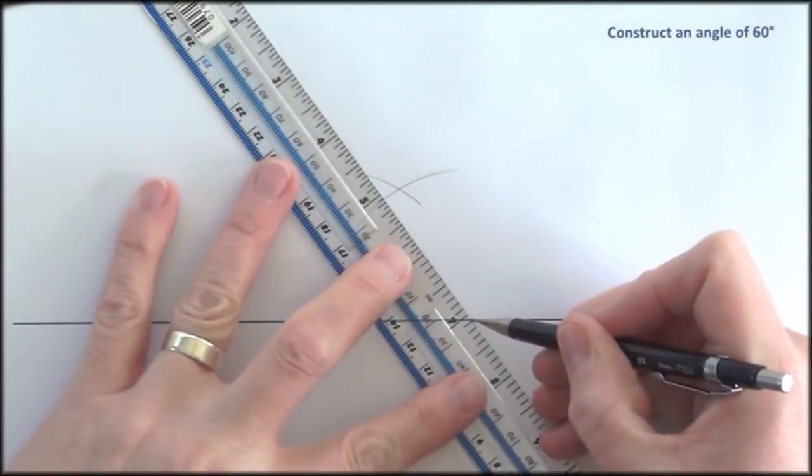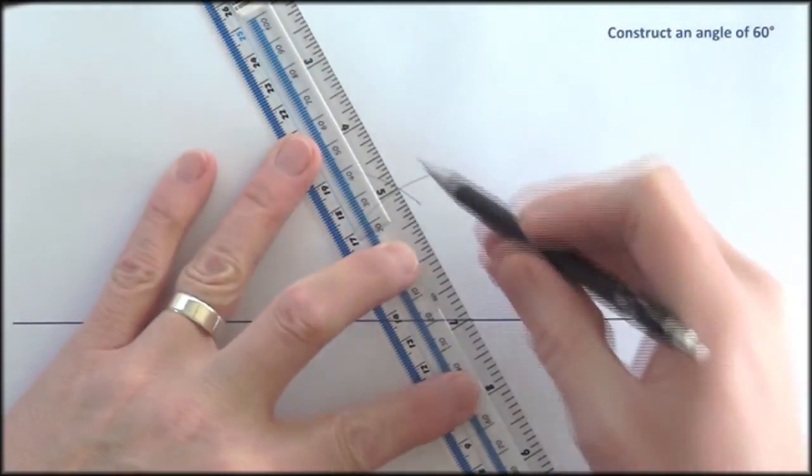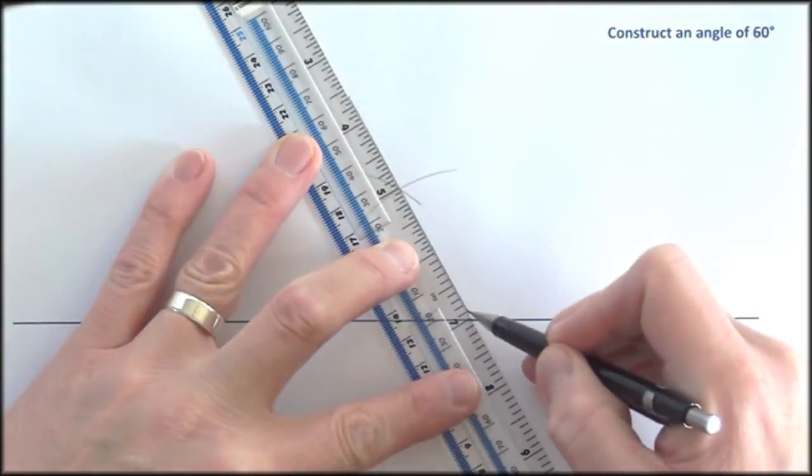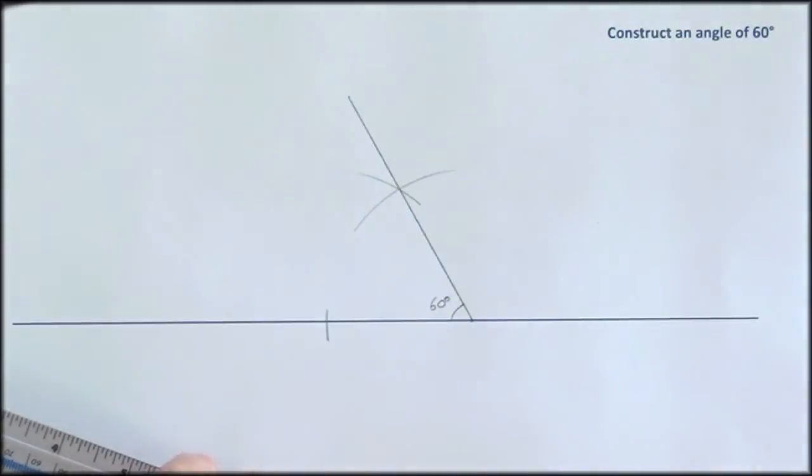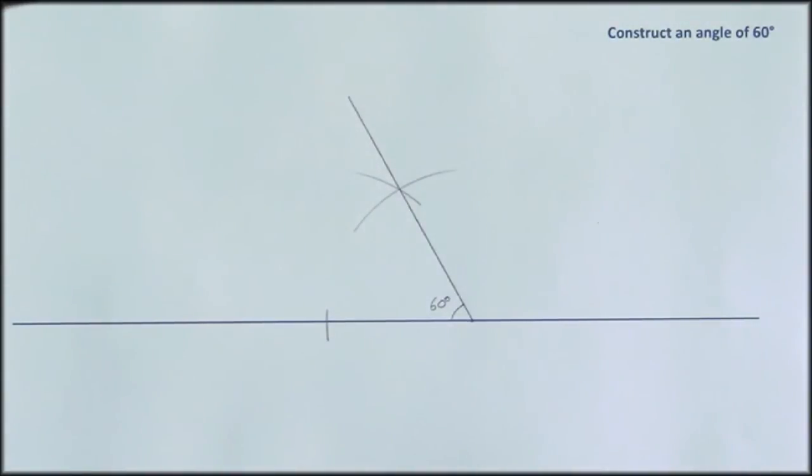So all I do is join up to there and that should be 60 degrees if I've done it right.